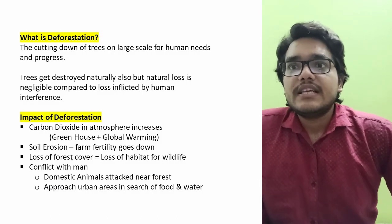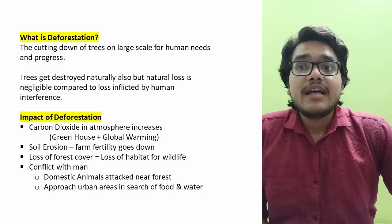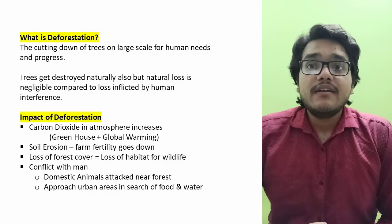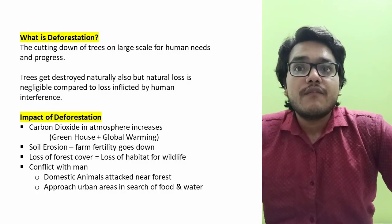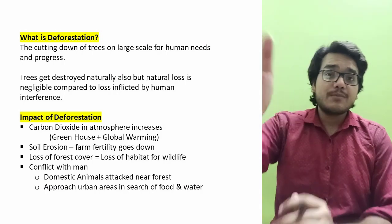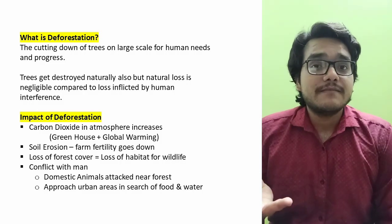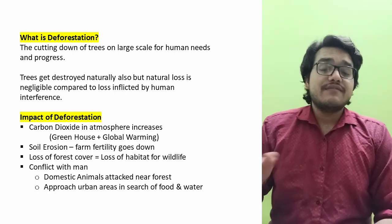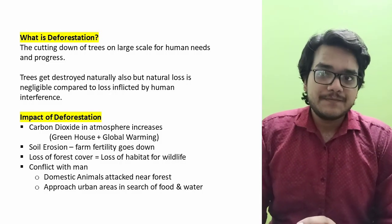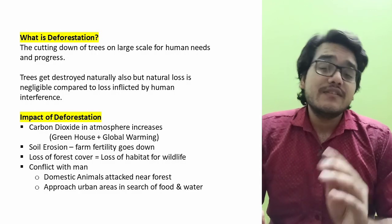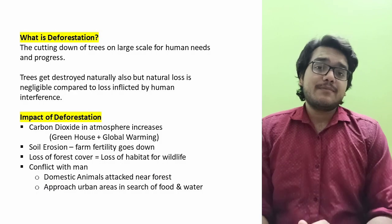The third impact is loss of wildlife habitat. When forest cover is lost, wildlife loses its habitat, and human-wildlife conflict begins. Wild animals move into urban areas searching for food because humans have destroyed their forest. Eventually humans kill them, increasing the conflict. Shepherds living on forest boundaries also have their cattle attacked by wild animals, further worsening the situation.